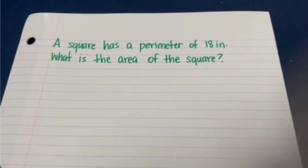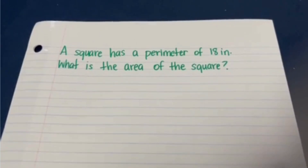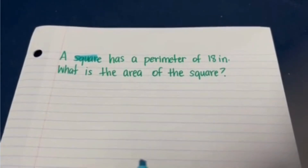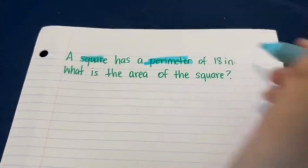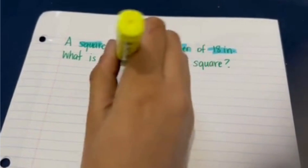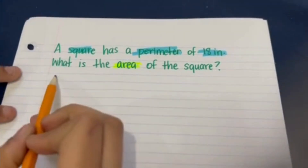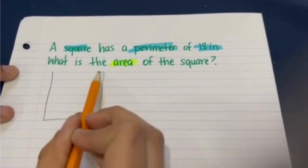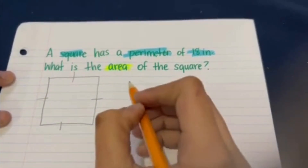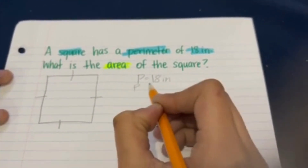A square has a perimeter of 18 inches — what is the area of the square? Let's start by highlighting what we know. Again, we are dealing with a square, meaning that all the sides will have an equal value. This time we already know the perimeter, which is 18 inches, and now we have to find the area. I'm going to draw a square on the side, and remember each of the square's sides will have an equal value.